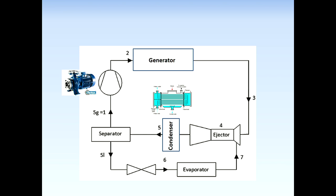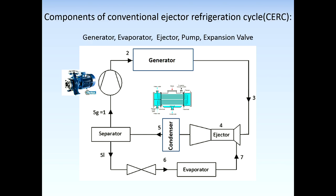Here we can see the components of a conventional ejector refrigeration cycle, denoted by CERC: a generator, an evaporator, an ejector, a pump, and an expansion valve.